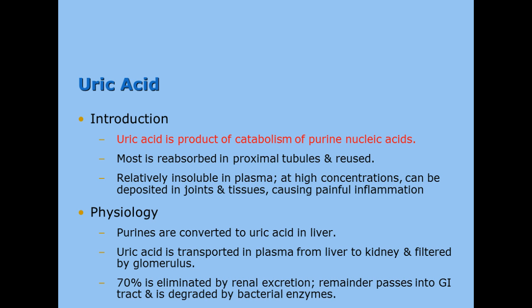The next NPN is uric acid. Uric acid is a product of the catabolism of purine nucleic acids, such as those that make up DNA. Most of it is reabsorbed in the proximal tubules and can be reused, but it's pretty insoluble in plasma. At very high concentrations and certain pH levels, it is deposited in the joints and tissues, causing very painful inflammation called gout. The purines are converted to uric acid in the liver, transported to the kidneys and filtered out by the glomerulus. About 70% is excreted; the remainder passes into the GI tract and is degraded by bacterial enzymes.